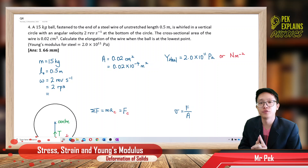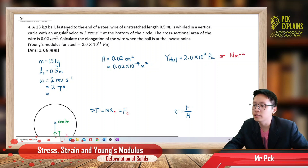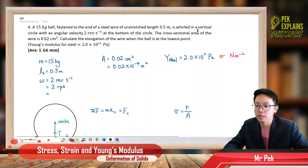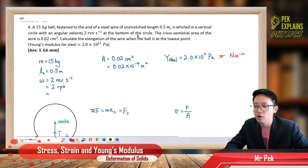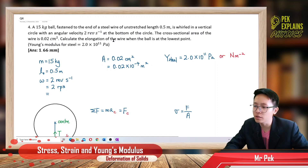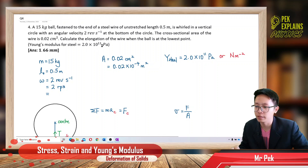This is question 4 in deformation of solids. A 15 kilogram ball fastened to the end of a steel wire of unstretched length 0.5 meter is wheeled in a vertical circle with an angular velocity of 2 revolutions per second at the bottom of the circle. The cross-section area of the wire is 0.02 cm². The Young's modulus given for steel is 2×10¹¹ Pascal.